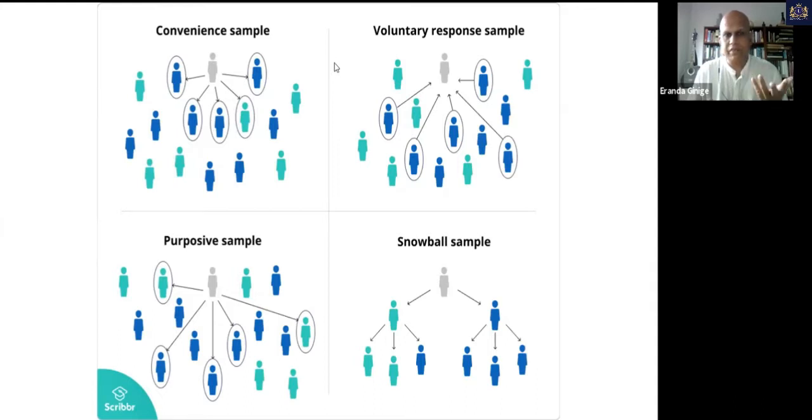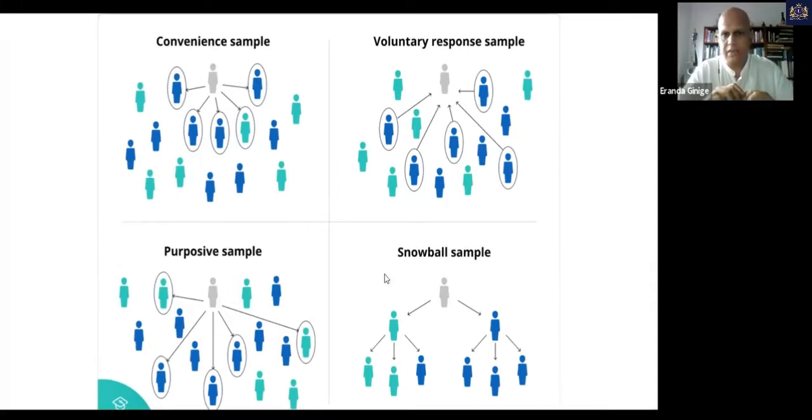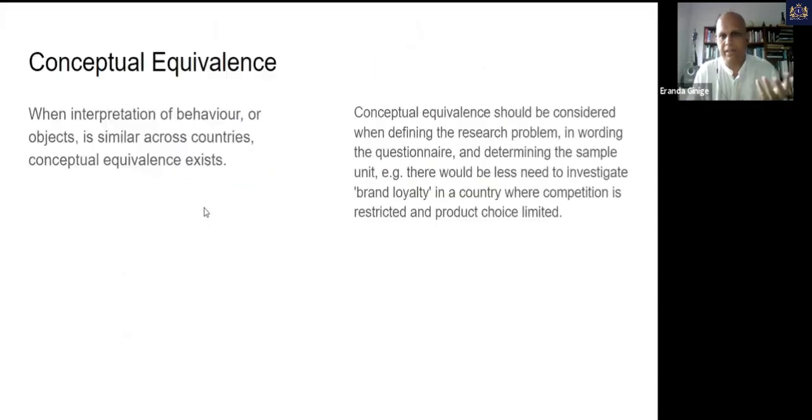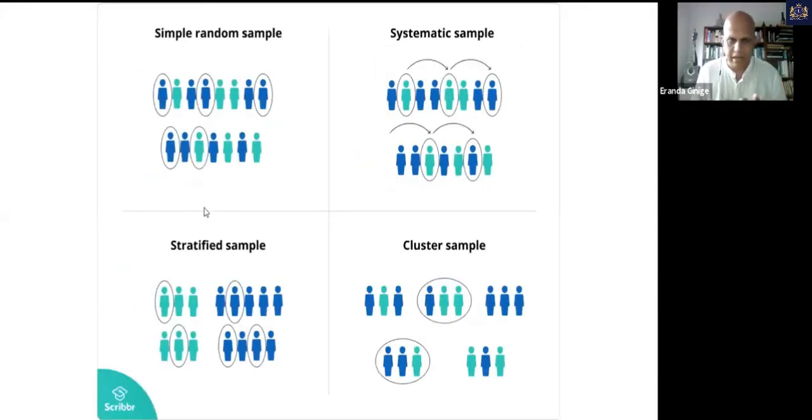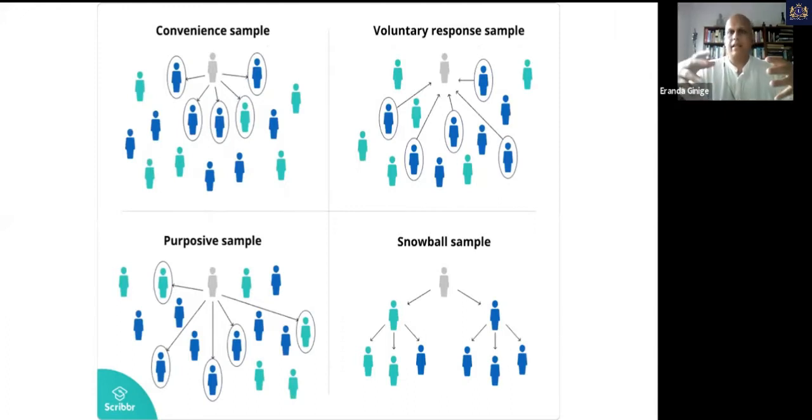In terms of convenience sample, very easy. If you are the person who is doing the research, you pick people based on your convenience. You're not using any sort of random or any other sampling method that we discussed earlier, systematic or stratified or whatever. You just pick people that you know, that is easier for you to contact and communicate. It's based on your convenience.